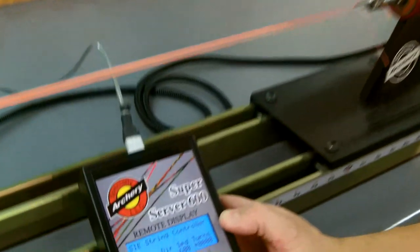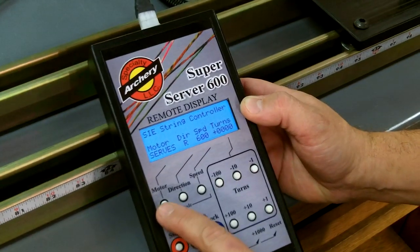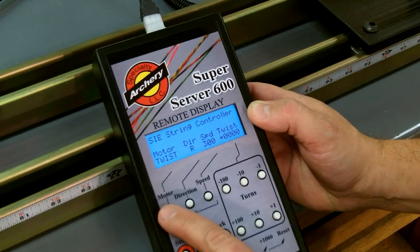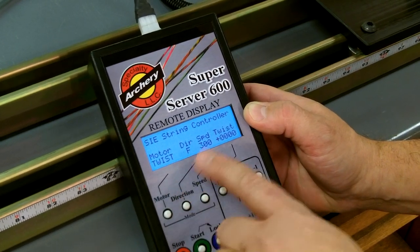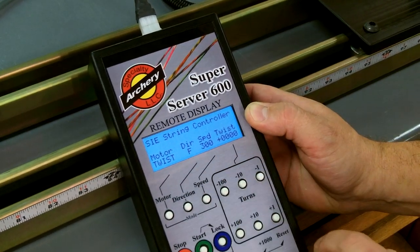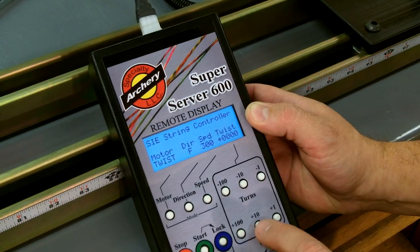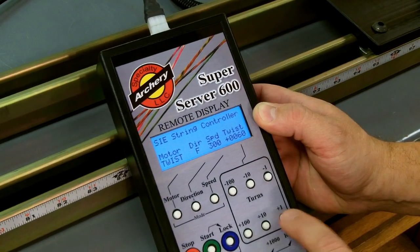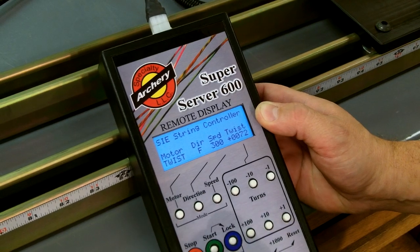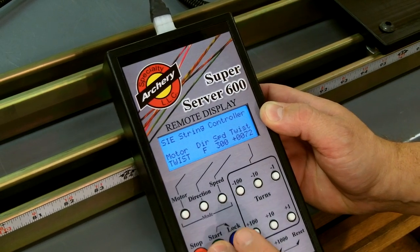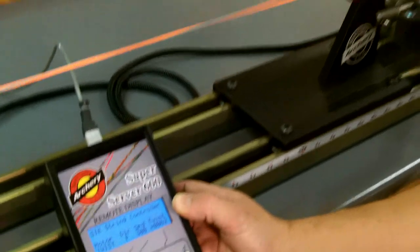We'll go to the remote display. On the motor selection, I'm going to select twist. For my setup, I always twist forward, speed 300. For this length of string, I put in 72 twists. To start it, hit the start button and the lock, and now we're twisting our string from both ends at the same time.